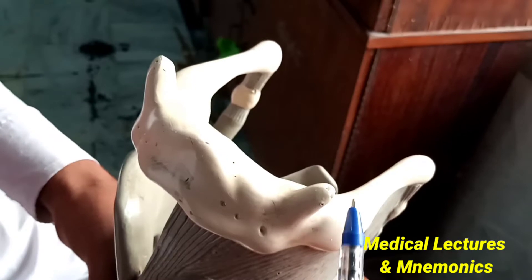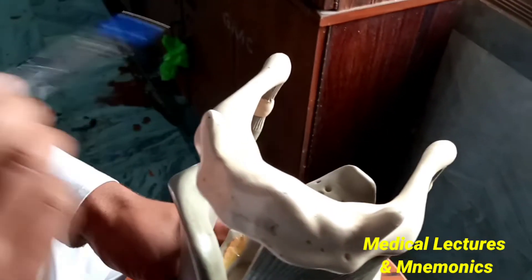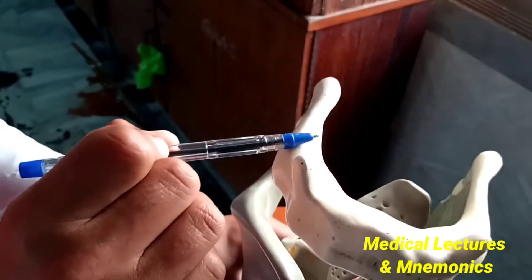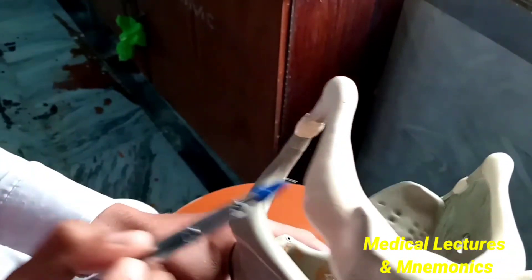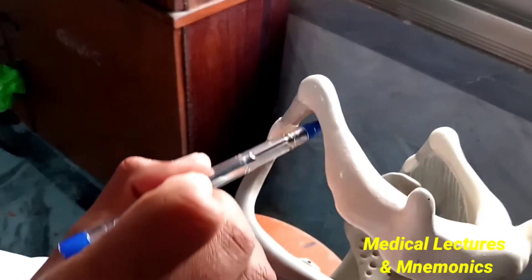This is the greater cornua of the hyoid bone. The greater cornua has two surfaces: one is the superior surface, and this is the inferior surface of the greater cornua of the hyoid bone.